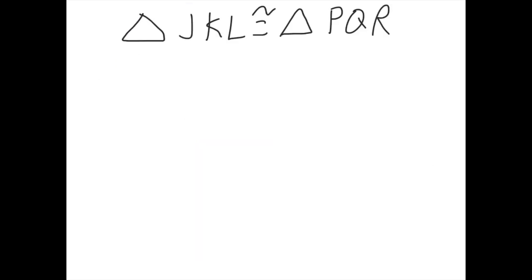One more example, then we're done. In this example, we have triangle JKL is congruent to triangle PQR, and I want you to tell me all the parts of the triangle that are congruent. I'm not going to give you a picture this time — just from this statement, you should be able to figure out which parts are congruent. The easiest part is the angles, so let's start with those. Remember, order matters. If J is in the first spot, it's congruent to the angle in the first spot, angle P. So, angle J is congruent to angle P.